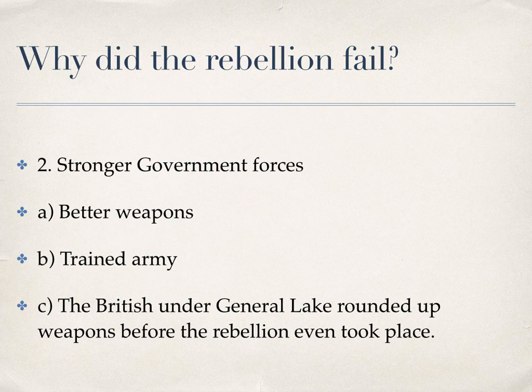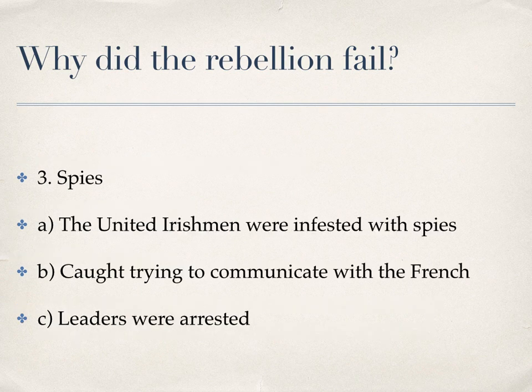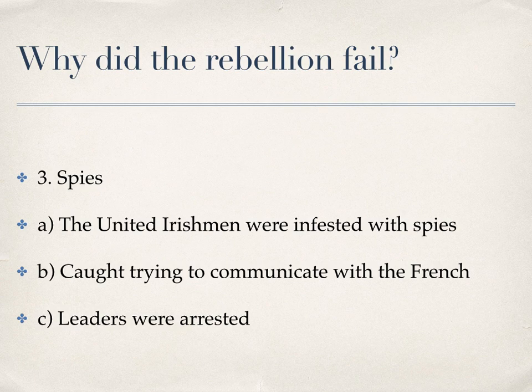The third reason was spies. General Lake rounded up weapons because spies had completely infiltrated the United Irishmen. They knew where weapons were hidden and where rebellions would break out. The spies caught the United Irishmen trying to communicate with the French in 1796, and in 1798 they knew all the leaders and arrested them before the rebellion broke out. Nothing was really secret from the British.